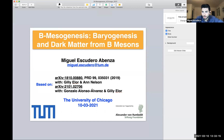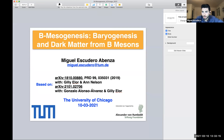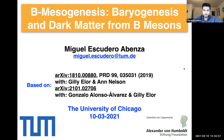Let me share my screen. Can you see it? So, hi there, everyone. My name is Miguel Escudero-Abenza, and I'm an Alexander von Humboldt fellow here at TUM in Munich. I'm really interested in fundamental physics, and in particular in dark matter, baryogenesis, dark energy, and neutrinos. In this seminar, I'm going to tell you about a mechanism for baryogenesis and dark matter production from the CP-violating oscillations and subsequent decays of B mesons in the early universe, which we have named B-mesogenesis.